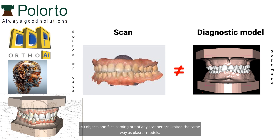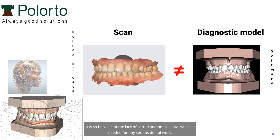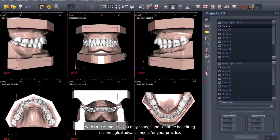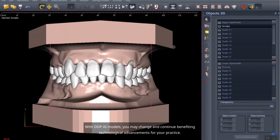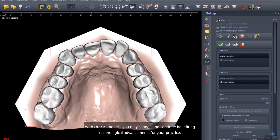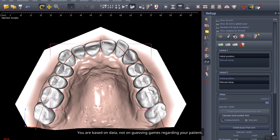3D objects and files coming out of any scanner are limited the same way as plaster models. It is so because of the lack of sorted anatomical data, which is needed for any serious dental work. With DDP AI models, you may change and continue benefiting from technological advancements for your practice. You are based on data, not on guessing games regarding your patient.